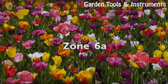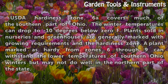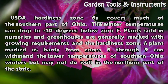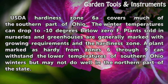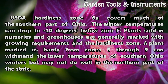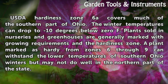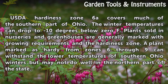Zone 6A. USDA hardiness Zone 6A covers much of the southern part of Ohio. The winter temperatures can drop up to 10 degrees below 0°F. Plants sold in nurseries and greenhouses are generally marked with growing requirements in the hardiness zone. A plant marked as hardy from Zone 6 through 9 can withstand the lower temperatures of southern Ohio winters but may not do well in the northern part of the state.